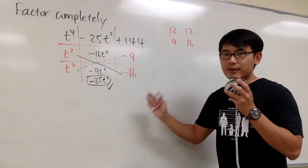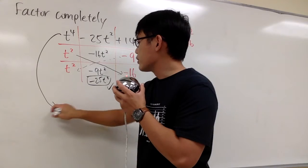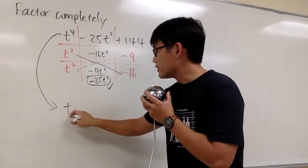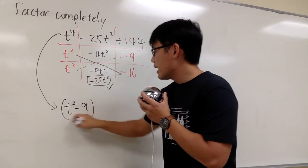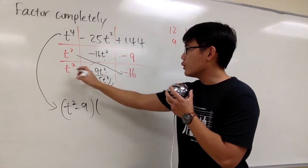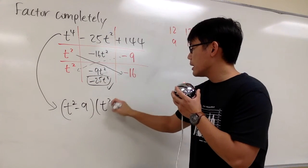Okay, so that means this is going to be t squared minus 9 as the first factor. And then we multiply with the second factor, which is t squared minus 16.